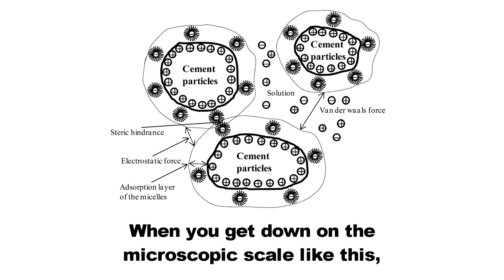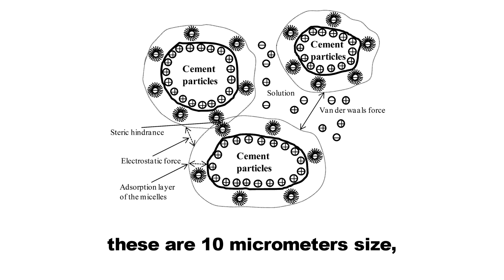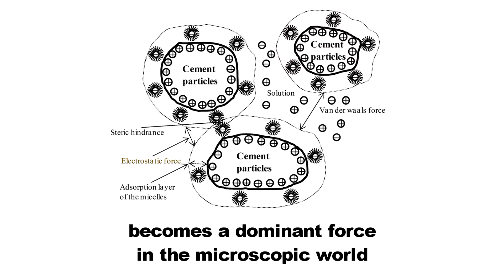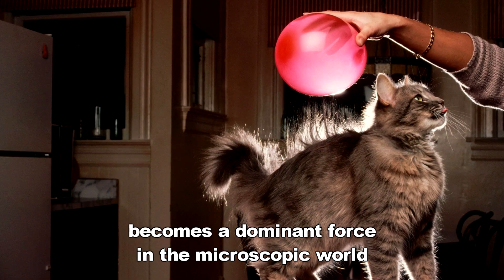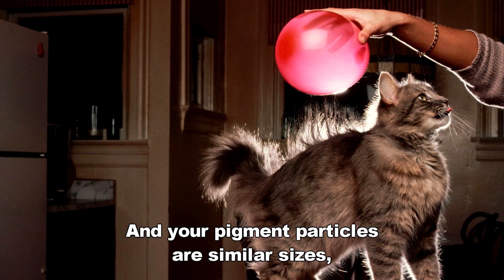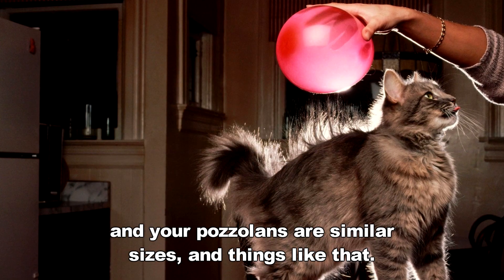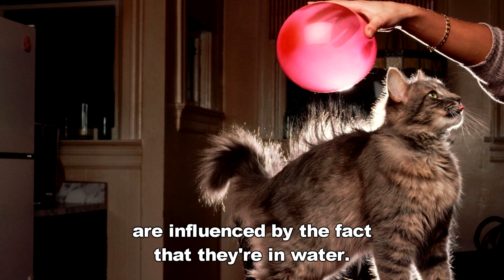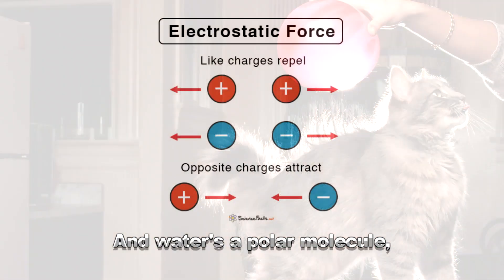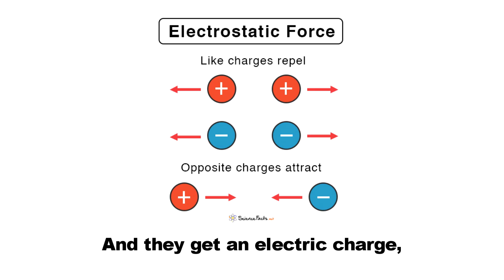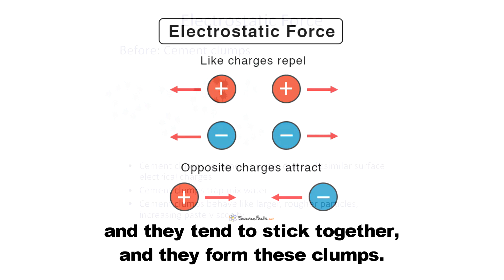When you get down on the microscopic scale like this — 10 nanometer size, 10 micrometer size — you get electrostatic properties. There's static electricity that becomes a dominant force in the microscopic world of cement particles. Your pigment particles are the same, similar sizes, and your pozzolans are similar sizes. So all these tiny particles are influenced by the fact that they're in water, and water is a polar molecule. These individual chunks of cement attract water to them, get an electric charge, and they tend to stick together and form clumps.